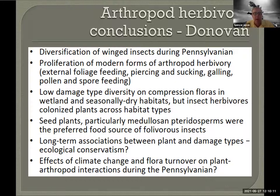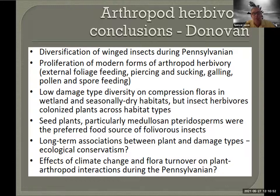Arthropods had already innovated and created most of the ways of feeding that we see in later assemblages. My take from Mike's talk is that there is no big change in arthropod herbivory evident across the Muscovian-Casimovian boundary. It may be that every way you could eat a plant, if you were an arthropod, was already in place sometime in the Muscovian, and there wasn't any real innovation driven by the change in vegetation. Is it really that different to eat different plants in terms of mechanical and nutritional barriers?